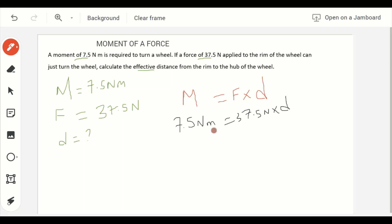We divide both sides by 37.5 newtons. So this cancels out this, and newton cancels out newton.